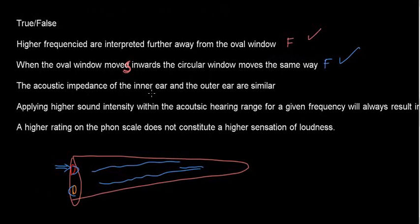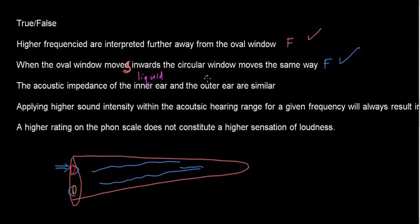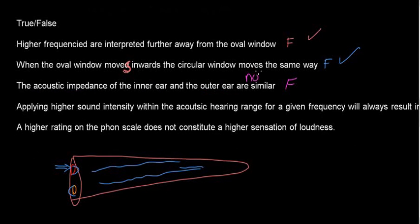The acoustic impedance of the inner ear and the outer ear are similar. This should scream out that it doesn't make sense, because the inner ear is an aqueous solution and the outer ear is air. The acoustic impedance of liquid and air are not the same. So I mark this FALSE — the acoustic impedance of the inner ear and the outer ear are not similar.